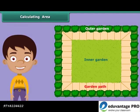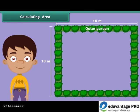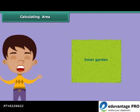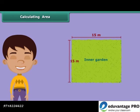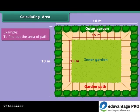Now let us advance a little further. Suppose there is a square garden of 18 meters. We want to make a provision for a path on all four sides. The inner garden, after the path is made, should be 15 meters. We want to find the area of the path. To do so, calculate and deduct the area of the inner garden from the area of the outer garden.